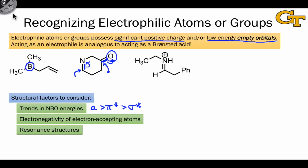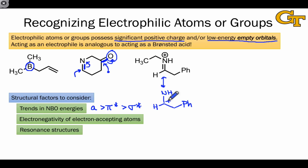Resonance structures are also important to consider for electrophiles. Lewis structures can be misleading in terms of which atoms they suggest are electron-deficient. For example, in a molecule where nitrogen is formally positively charged, nitrogen is not actually electron-deficient — you could verify this with an electrostatic potential map. The second-best resonance structure, which places positive charge on the carbon atom, does a much better job of showing the actual electron density distribution. That carbon is the most electrophilic atom in the molecule, not the nitrogen. Resonance structures can show us hidden sites of reactivity that we would not identify without drawing or thinking about the resonance form.